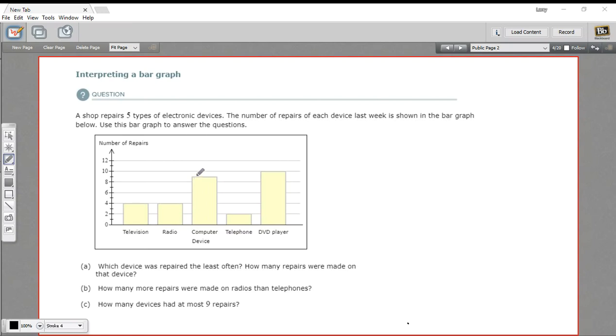In this problem, we are interpreting a bar graph. We've got a graph here. On the y-axis, it says number of repairs, and we've got some numbers here.